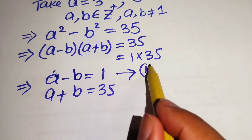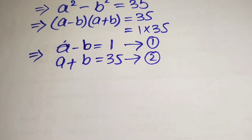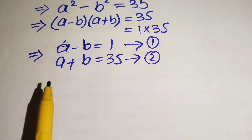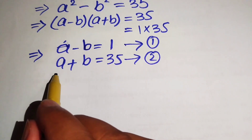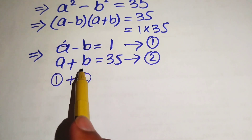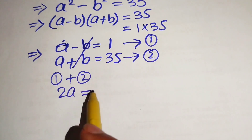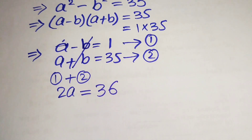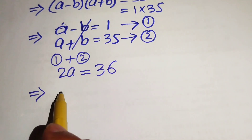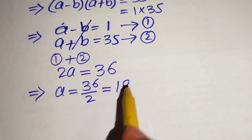We take these as equation one and equation two. To find the value of m we need a or b, so we add the two equations. The b terms cancel, giving 2a equals 1 plus 35 equals 36. Dividing by 2, we get a equals 18.